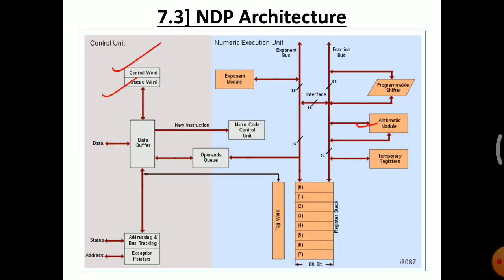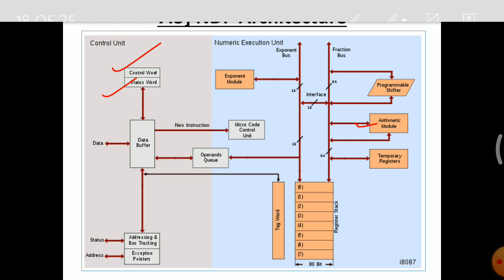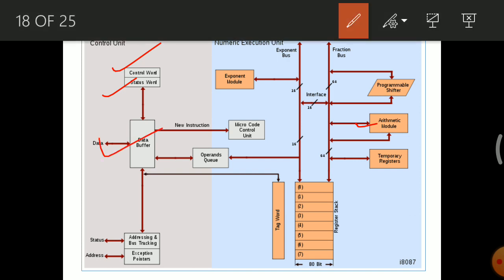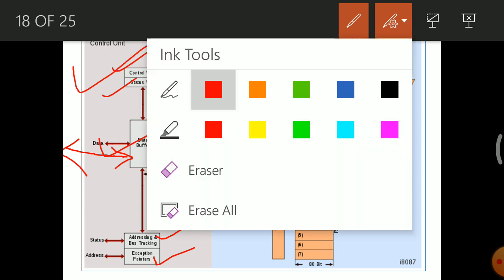The data bus buffer acts as a mediator between the 8087 and the external world. Whatever data has to be taken as input is received through the data bus buffer, and whatever output has to be sent goes out through the data bus buffer. Status and address bits are also sent or received through these blocks. That concludes the control unit.